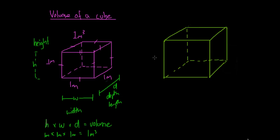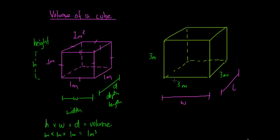If we go over to our next cube and we have a 3 meter by 3 meter by 3 meter cube, we know that the length here is going to be 3 meters, the width here is going to be 3 meters, and the height is going to be 3 meters again — because it's a cube it has all the same dimensions. We can denote this with little dashes on the edges, meaning everything's the same length.